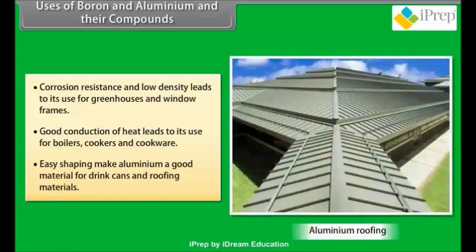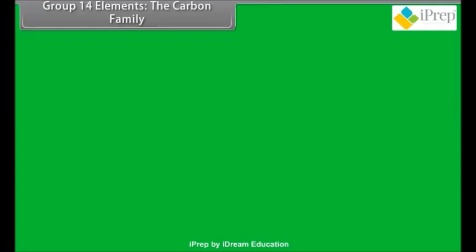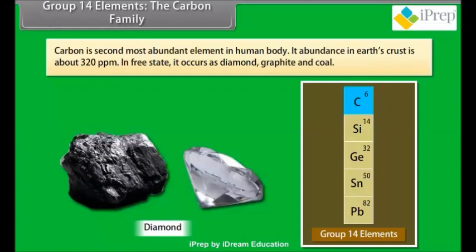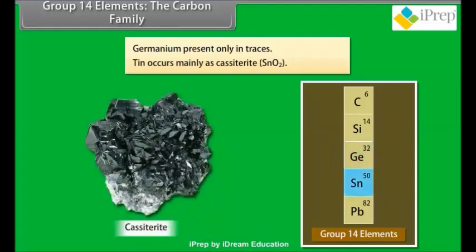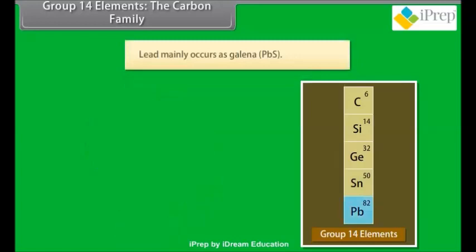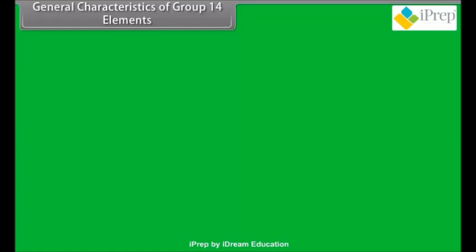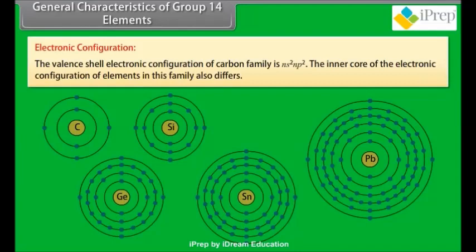Group 14 elements, the carbon family. Carbon is the second most abundant element in human body. Its abundance in Earth's crust is about 320 parts per million. In free state, it occurs as diamond, graphite, and coal. Silicon is the second most abundant element on Earth's crust and is present in nature in the form of silica and silicates. Germanium is present only in traces. Tin occurs mainly as cassiterite SnO2. Lead mainly occurs as galena PbS.